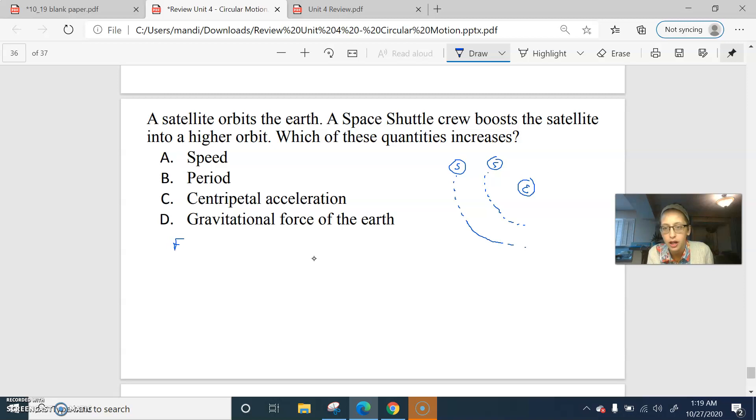Well, centripetal force is still caused by gravity. So we can say mv squared over r equals big G mm over r squared. The mass of the satellite cancels out. One of the radii cancels out. So the velocity is dependent on big G, mass of the Earth over r. What do these quantities change?